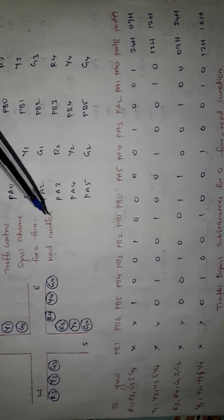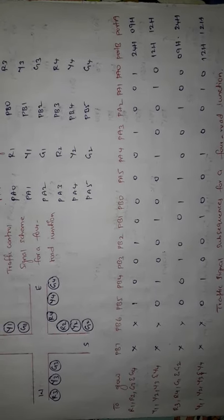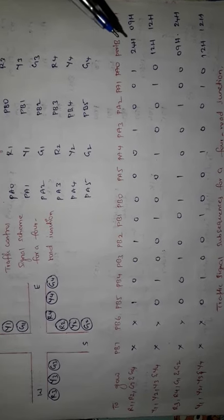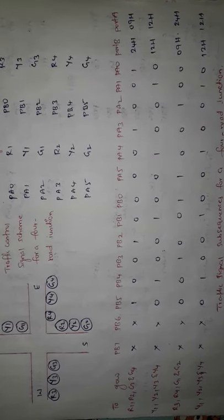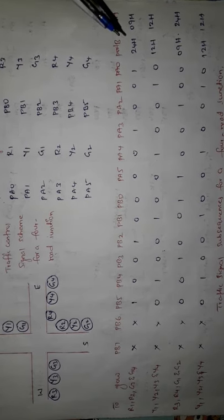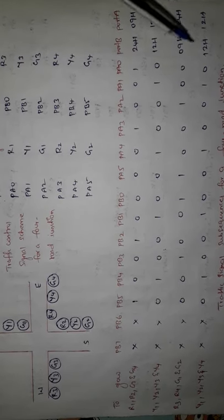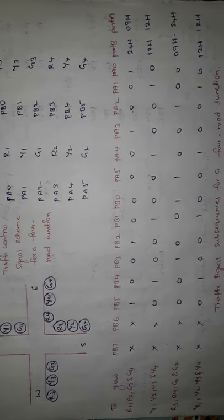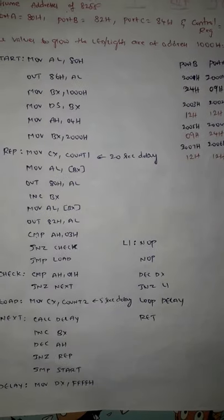To summarize, we implement four sub-sequences. The values to be written to ports A and B are: sub-sequence 1: 09h and 24h; sub-sequence 2: 12h and 12h; sub-sequence 3: 09h and 24h; sub-sequence 4: 12h and 12h. Now let us see how to interface these traffic lights to the 8086 processor.